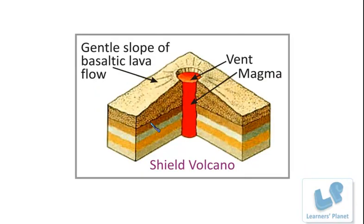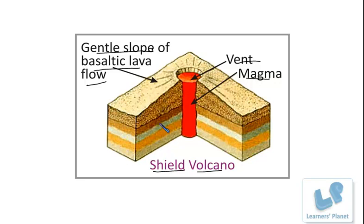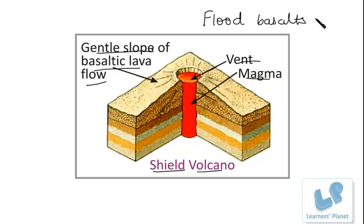The third type is the shield volcano. Shield volcanoes are shaped like a bowl or shield in the middle with long, gentle slopes made by basaltic lava flows. Basalt lava flows from these volcanoes are called flood basalts. The volcanoes that formed the basalt of the Columbia Plateau were shield volcanoes.